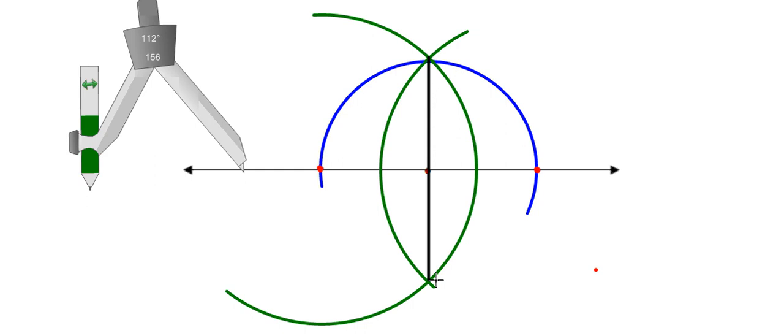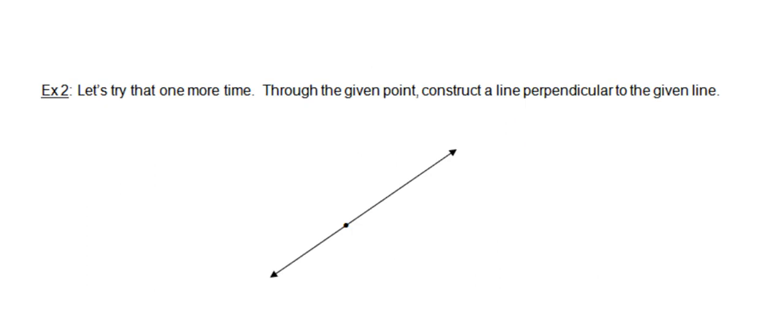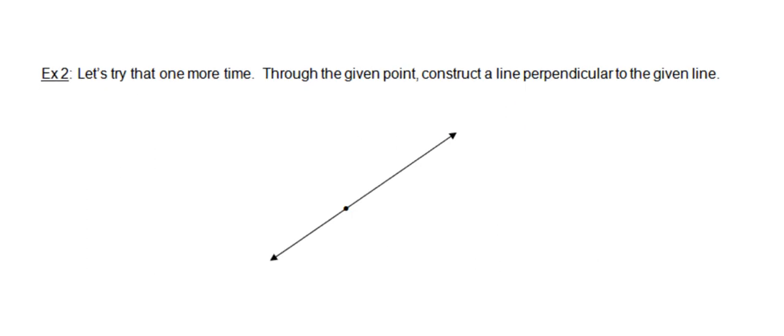Without any ruler, protractor, or measuring device, you've done two things: you've created a pair of congruent line segments, and you've constructed a 90-degree angle. Very cool. Just to make sure you've got your head wrapped around that, let's do that one more time.